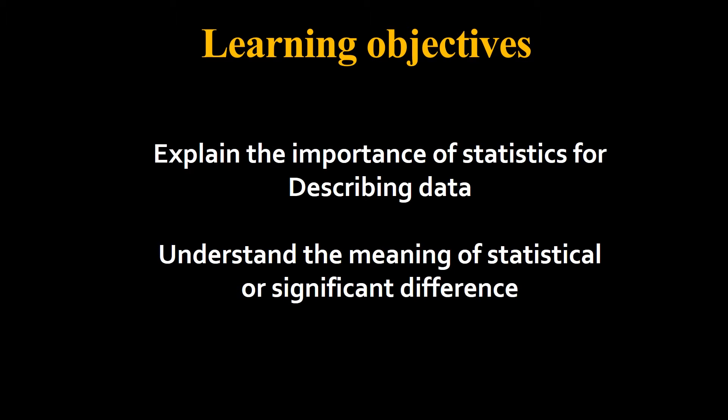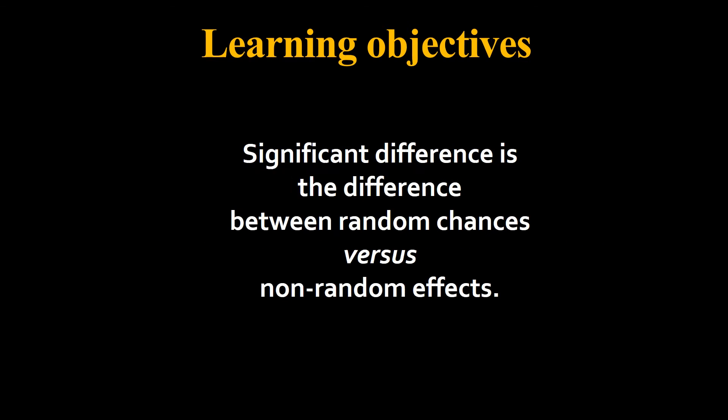Our objectives today: we're going to learn the importance of using statistics to describe our data, and we're going to understand the meaning of the word significance. Significance in science has a very specific meaning. A significant difference is the difference between random chance versus non-random effects.